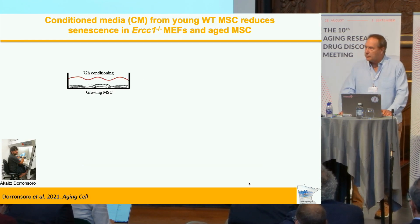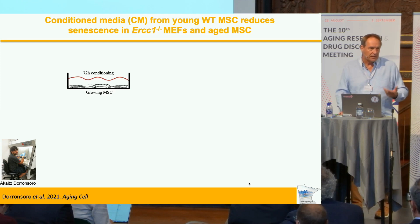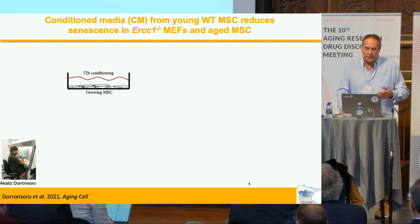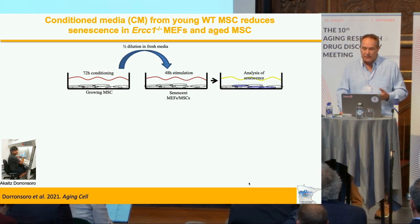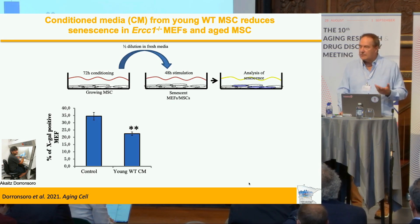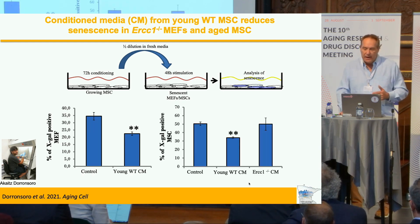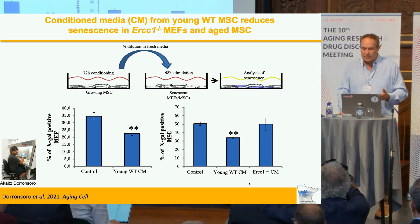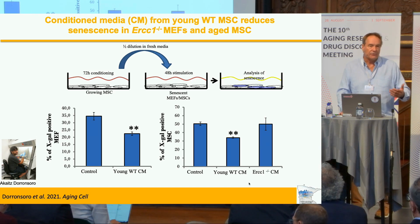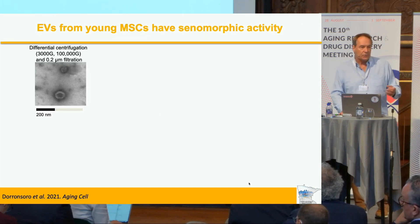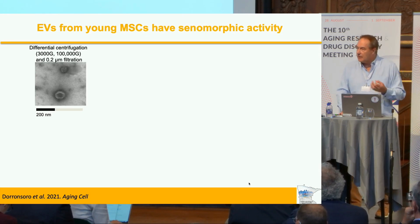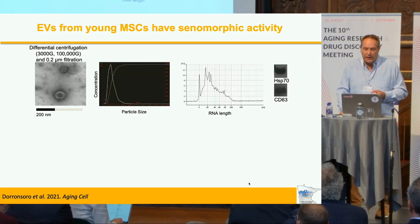We then went on to show that if you took conditioned media from adult stem cells — whether MSCs, muscle-derived stem cells, or adipose-derived stem cells — and put it on senescent cells, conditioned media from young stem cells suppress senescence. There was no cell death, so this is a senomorphic suppression, and this worked in both senescent MEFs and senescent MSCs. Conditioned media from progeria stem cells had no effect, so they appear to lose function with aging.